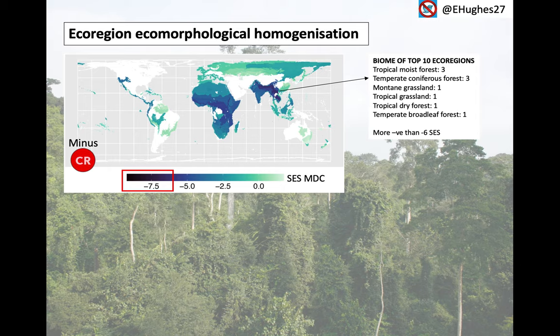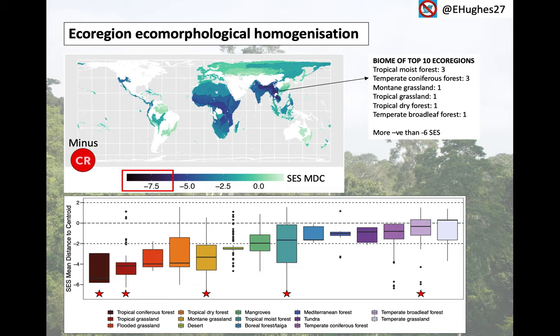Each ecoregion can be grouped into one of 14 major biomes, which broadly capture major habitat types. The top 10 most homogenised ecoregions are grouped here. If we group all ecoregions by their biome and calculate the median, the box and whisker plot shows the spread of values in more detail. The median scores of mean distance to centroid are along the y-axis, and biomes are along the x-axis. The stars correspond to the biomes of the top 10 ecoregions identified above. Tropical coniferous forest and tropical grassland are the most threatened biomes. Notably, tropical moist forest averages at less negative than minus 2, but the spread of values is the greatest for any biome, indicating that some tropical areas are at particular risk of ecomorphological homogenisation whilst others are less so.